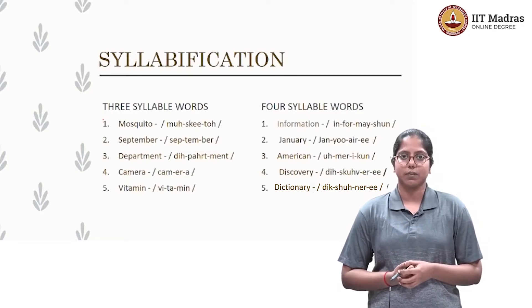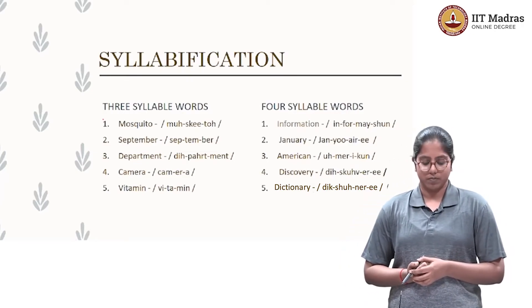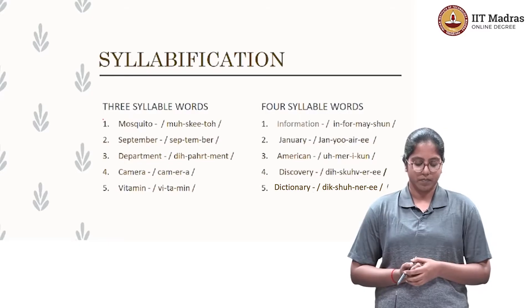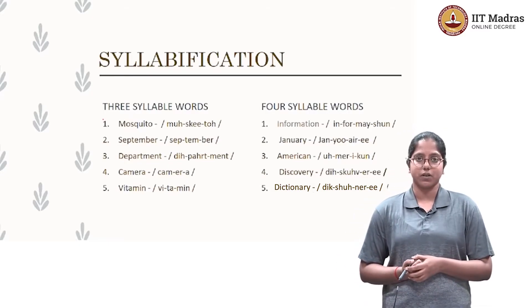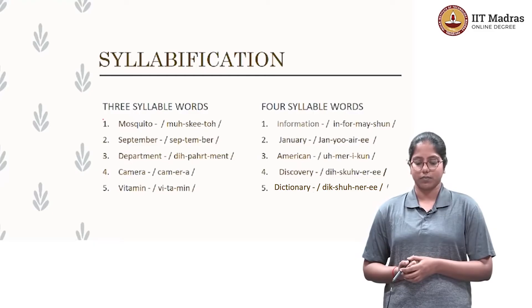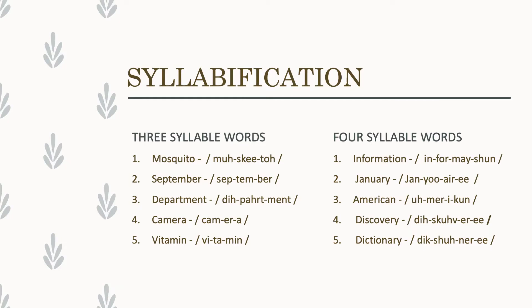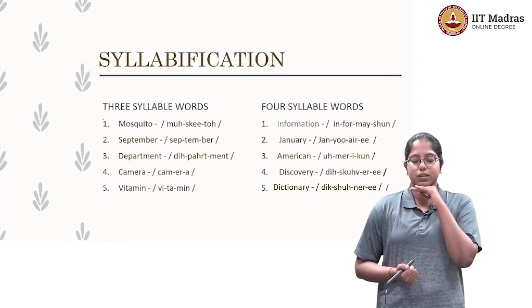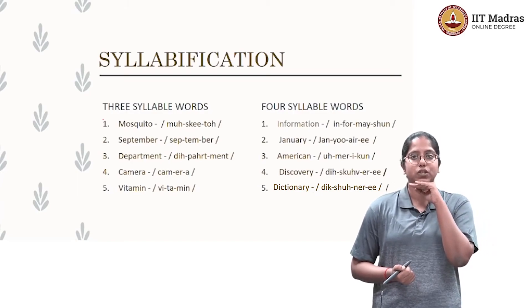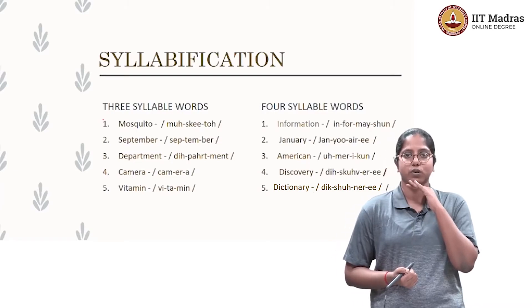Now let's come to three-syllabled words: mosquito, September, department, camera, vitamin — these are all three-syllabled words. Coming to the four-syllabled words: information, January, American, dictionary, discovery. For example, 'information' — my jaw drops four times.